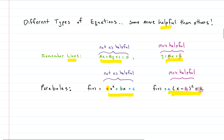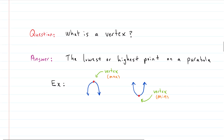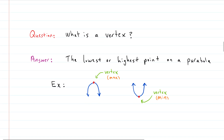A vertex is the lowest or highest point on the parabola. Importantly, it is an actual point — a point has an x and a y coordinate, so if someone asks you to find the vertex, give them a point. If the parabola opens down, the vertex is a maximum; if it opens up, the vertex is a minimum.